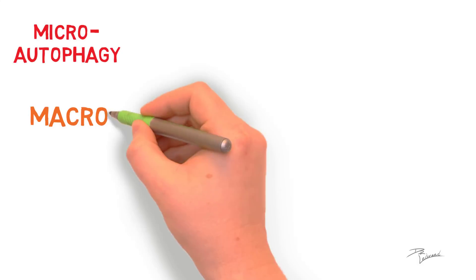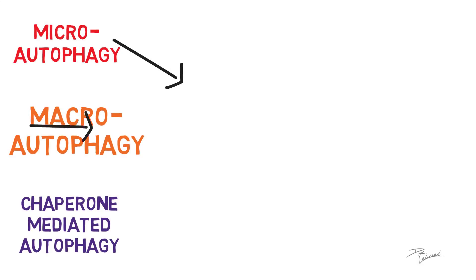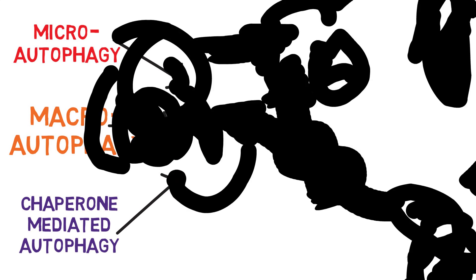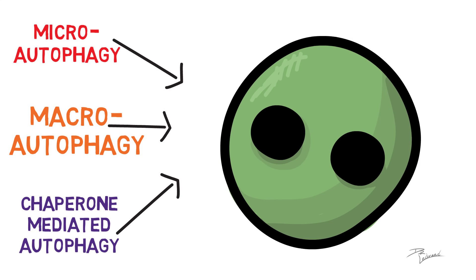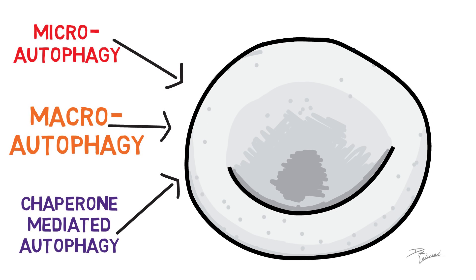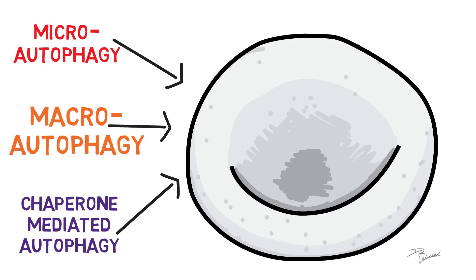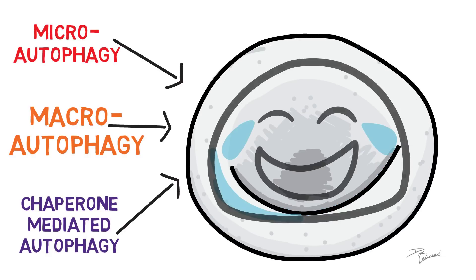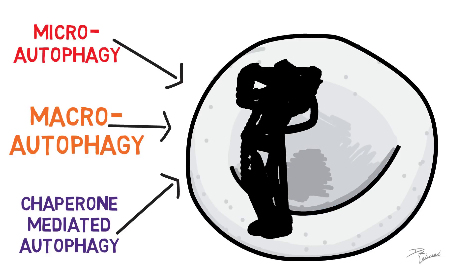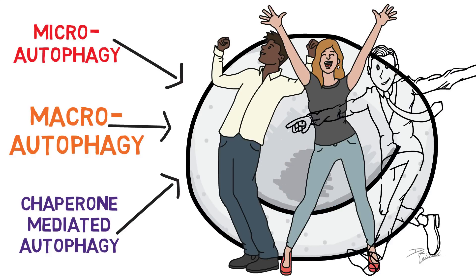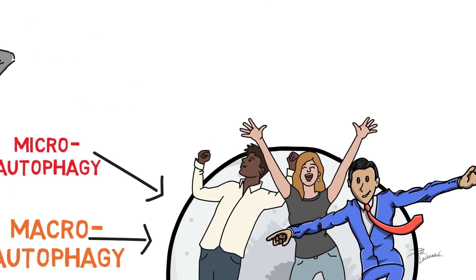All three types of autophagy are very important in the process of recycling our cells — getting rid of old cells and making way for new, vibrant cells to make us feel and look younger.